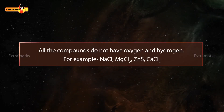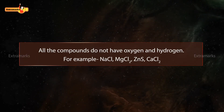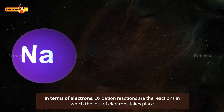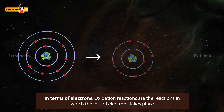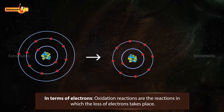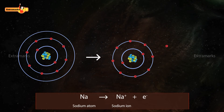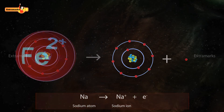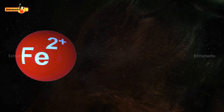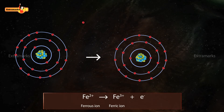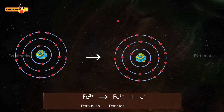All compounds do not have oxygen and hydrogen, but they all contain electrons. Therefore, oxidation reactions can also be defined as reactions which involve loss of electrons. Here, a sodium atom is losing an electron to form a sodium ion. Similarly, ferrous ion loses one electron to form ferric ion.